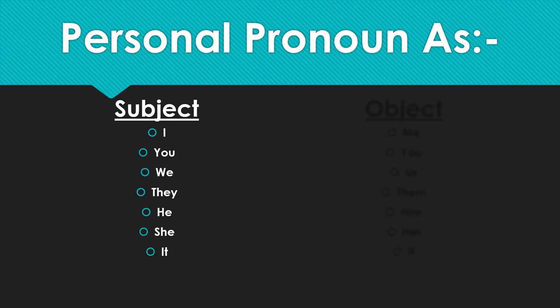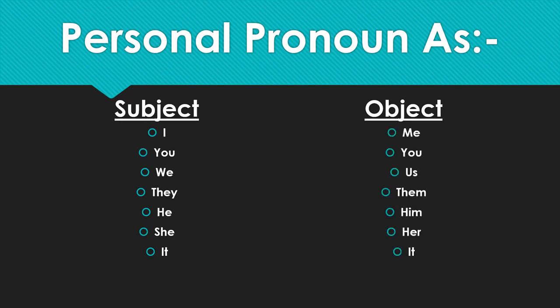When we have to change the subject and show it as the object, the terms change as such: I becomes me. You remains you — it's an exception in grammar. We becomes us. They becomes them. He becomes him. She becomes her. It remains it.